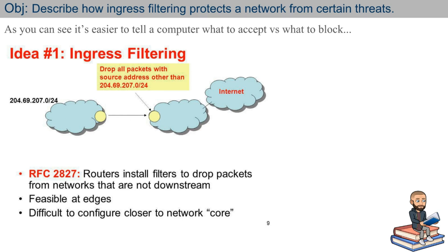If I'm doing something called IP spoofing, and I'm a number in this network trying to go out to the internet, but my IP isn't a number from this network — let's say I made one up — when this router gets it, it's going to drop it and that request never goes out and bothers anyone else. Routers will have filters that drop packets from networks that are not downstream of them.